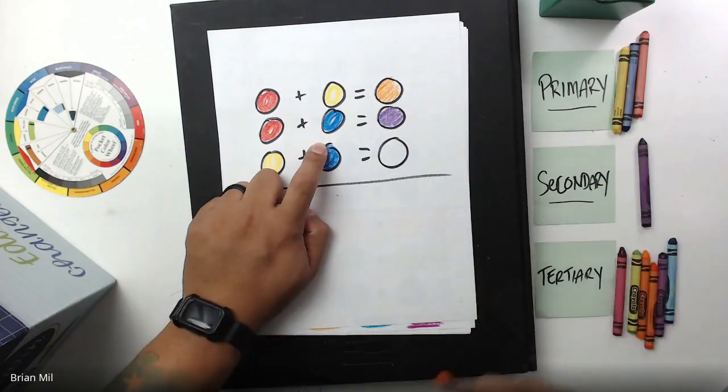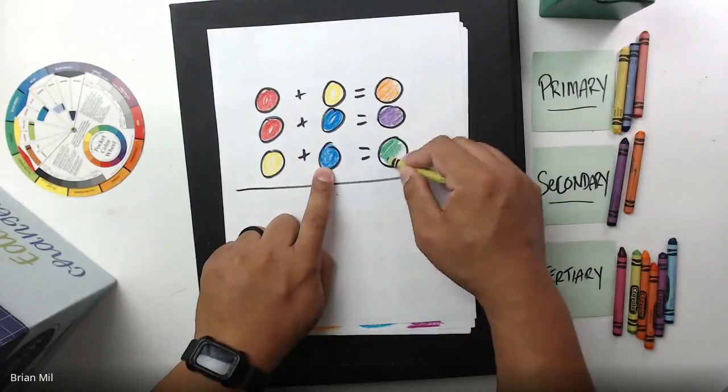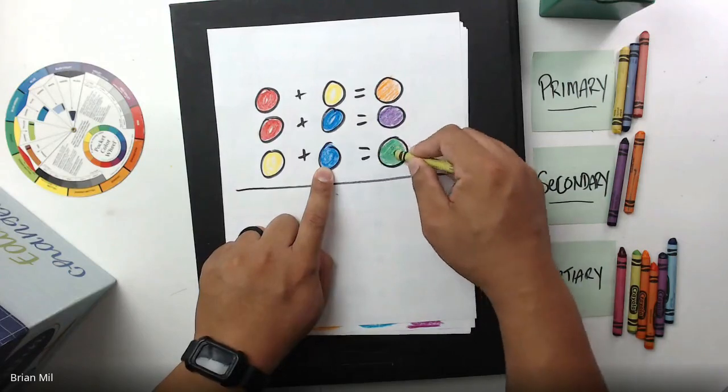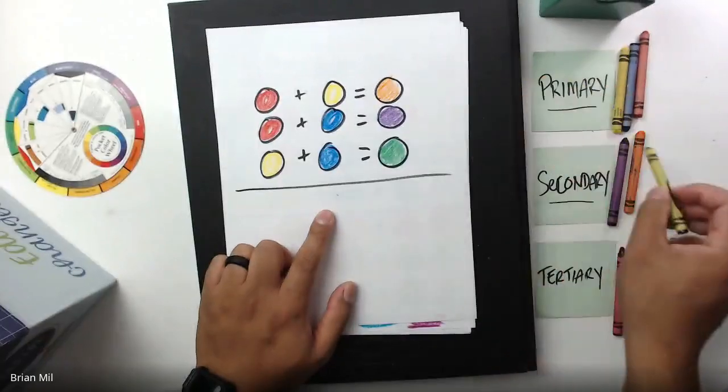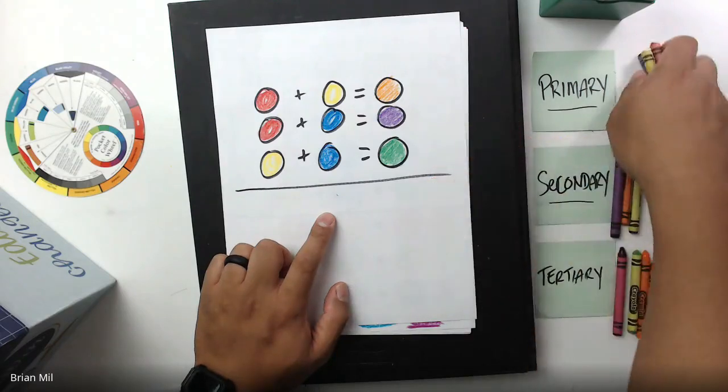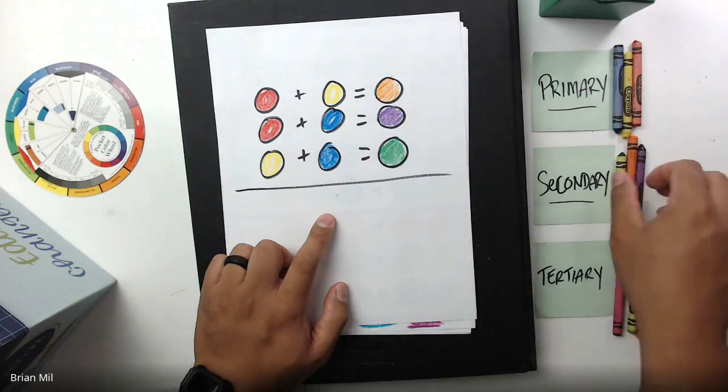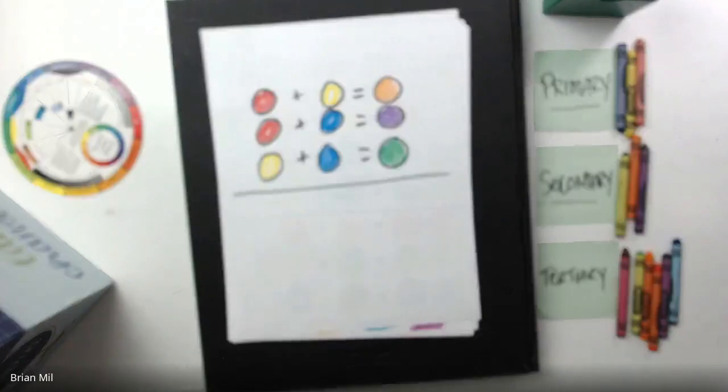Last but not least, yellow plus blue equals green. So these are primary colors added together and they all equal different types of secondary colors. Now there's only three primary colors and there's only three secondary colors. Let's see what happens when you add some primary colors with secondary colors.